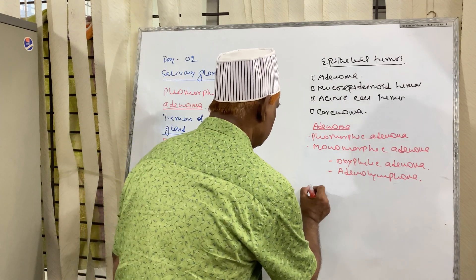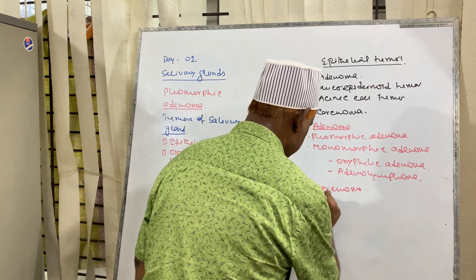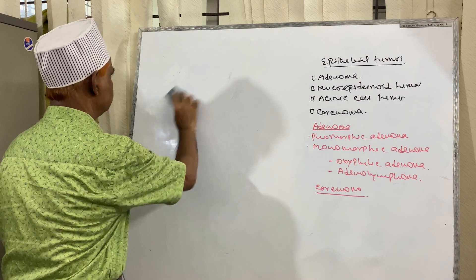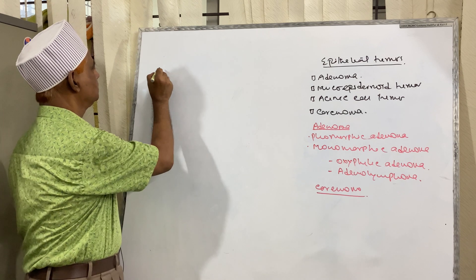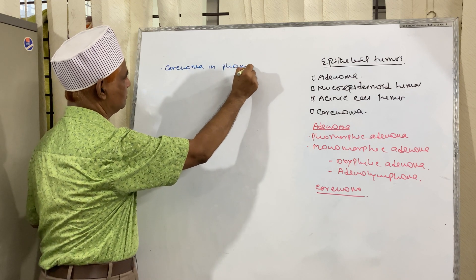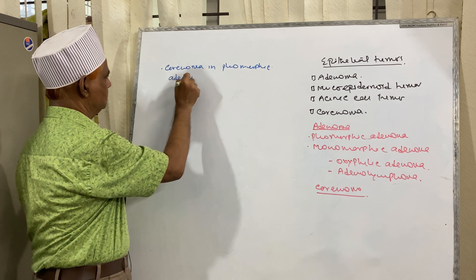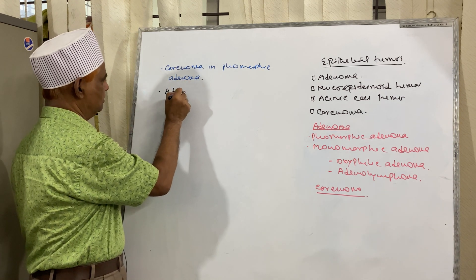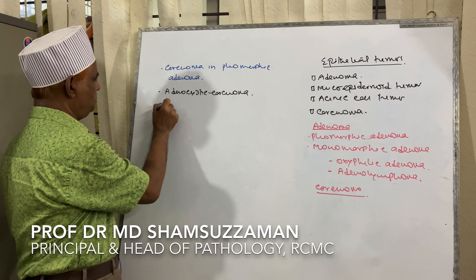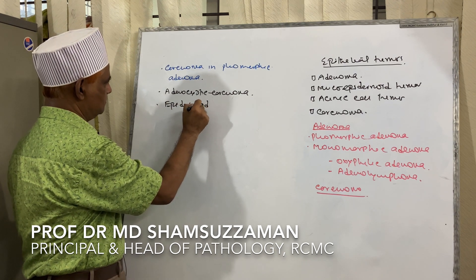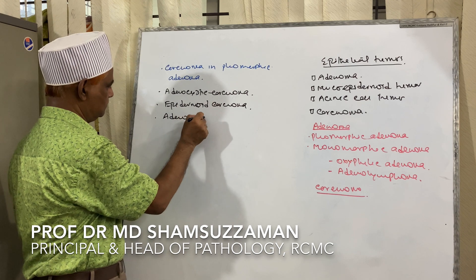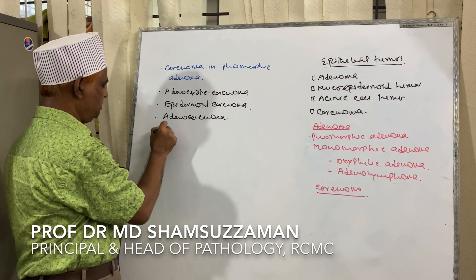Carcinoma of the salivary gland may be Carcinoma in Pleomorphic Adenoma, Adenocystic Carcinoma, Epidermoid Carcinoma, Adenocarcinoma, and Undifferentiated Carcinoma.